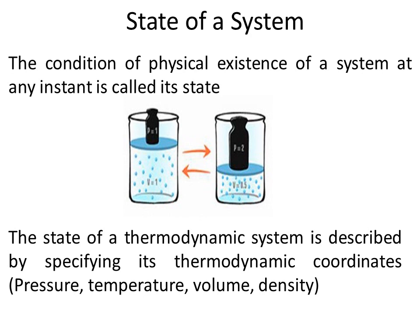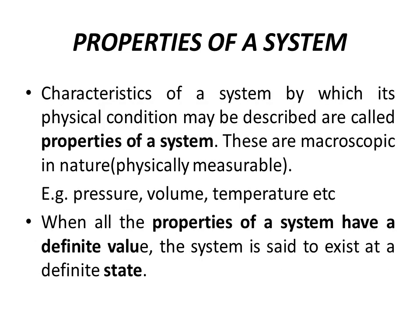The condition of physical existence of a system at any instant is called its state. The state of a thermodynamic system is described by specifying its thermodynamic coordinates or properties such as pressure, temperature, volume, density, etc. Characteristics of a system by which its physical condition may be described are called properties of a system. These are macroscopic in nature and physically measurable. When all the properties of a system have a definite value, the system is said to exist at a definite state.